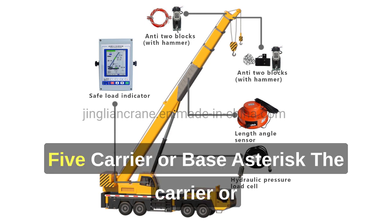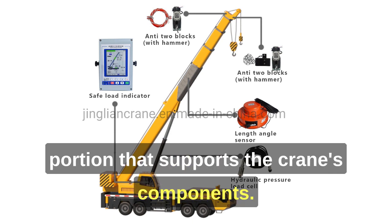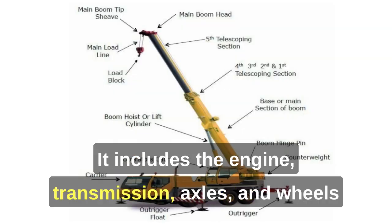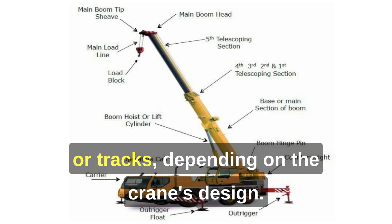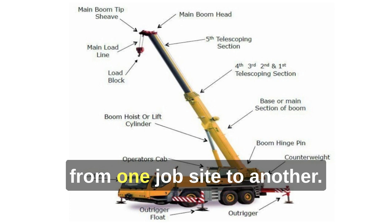5. Carrier or Base — The carrier or base of the mobile crane is the vehicle portion that supports the crane's components. It includes the engine, transmission, axles, and wheels or tracks, depending on the crane's design. The carrier allows the crane to move from one job site to another.